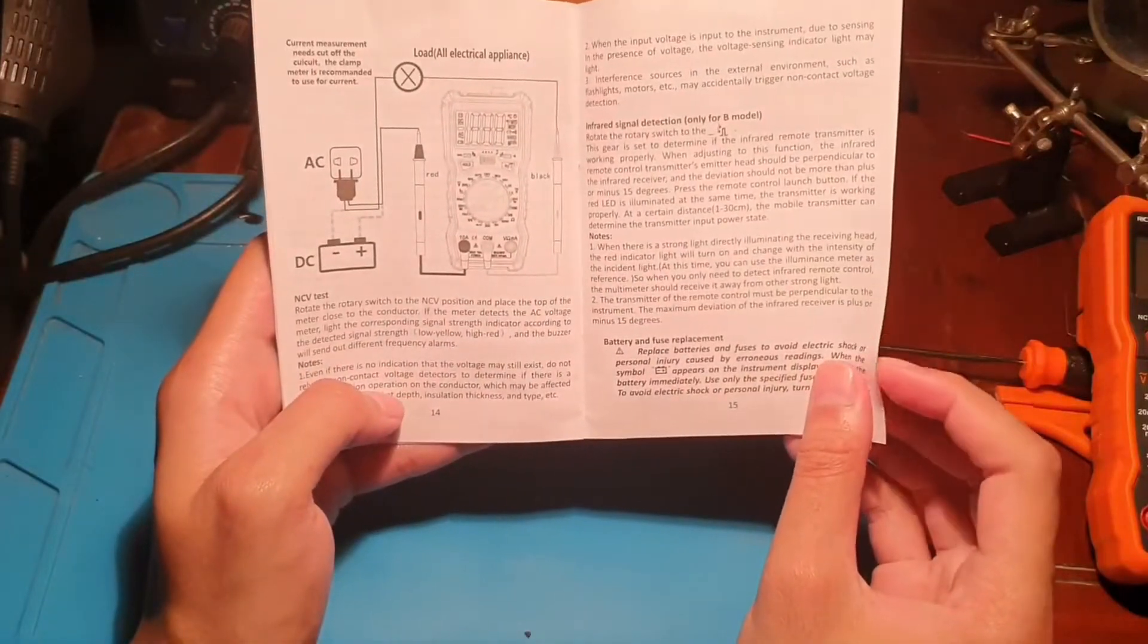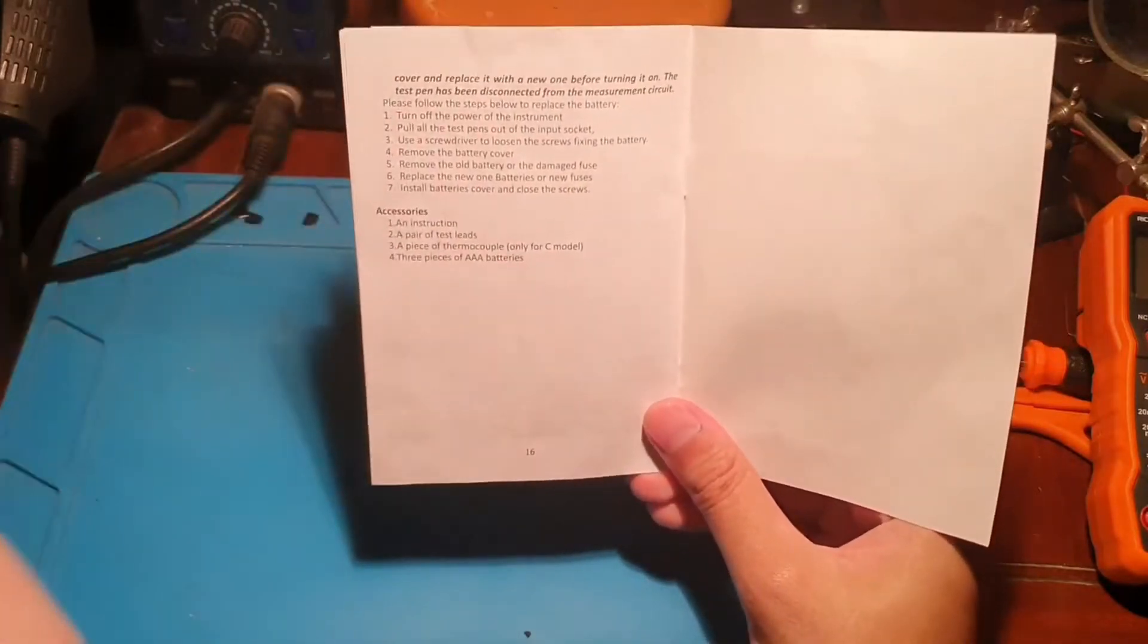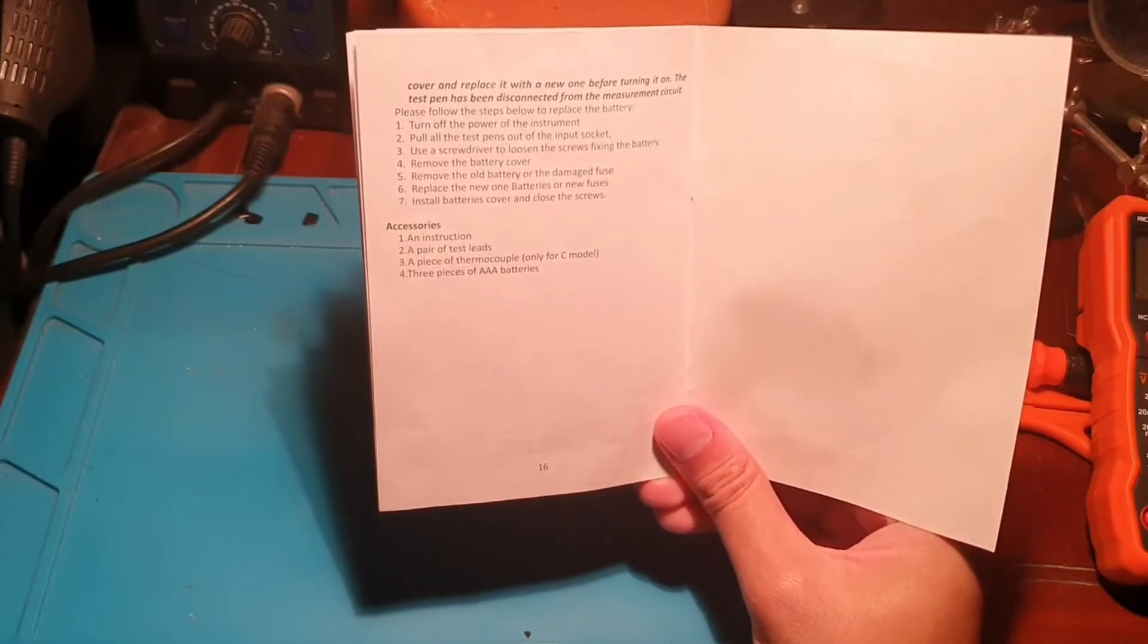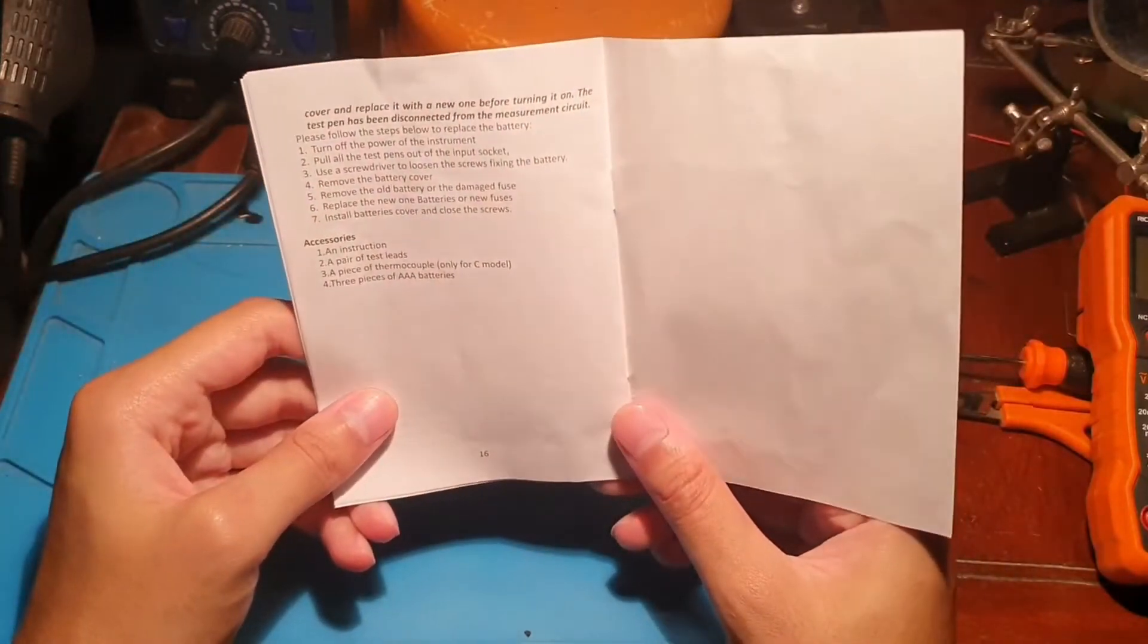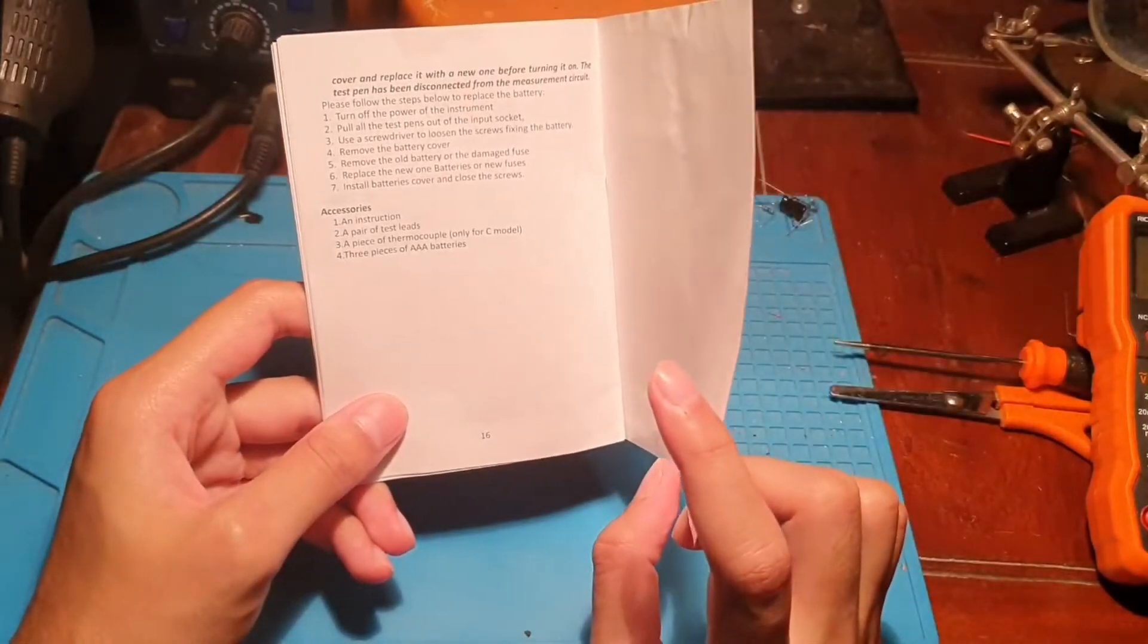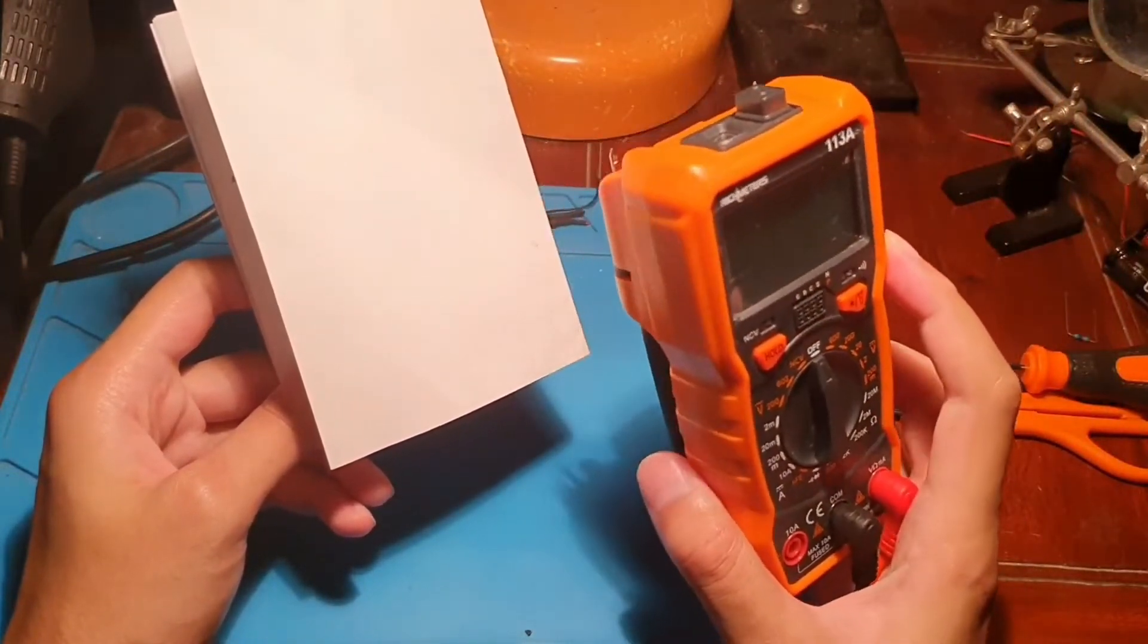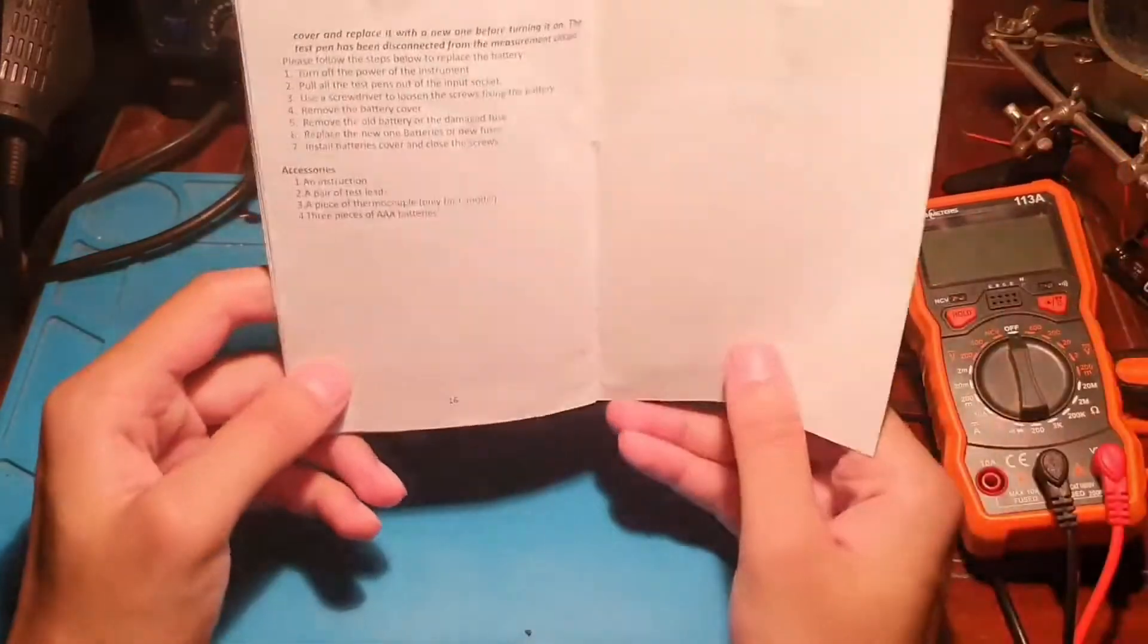This is how to test AC load, airplanes, electrical buttons and accessories. What's provided is an instruction, a pair of test leads, a piece of thermocouple - oh, there's a C model as well. There are three models: A, B, C. Three pieces of AAA battery - the AAA batteries I have to put inside, but they didn't provide the batteries, so that's kind of unfortunate.